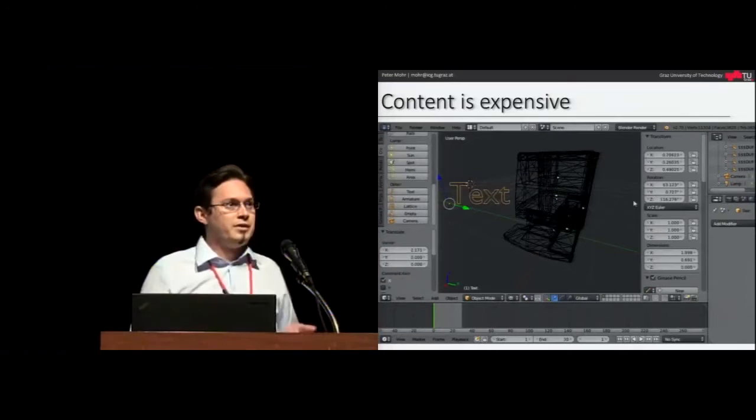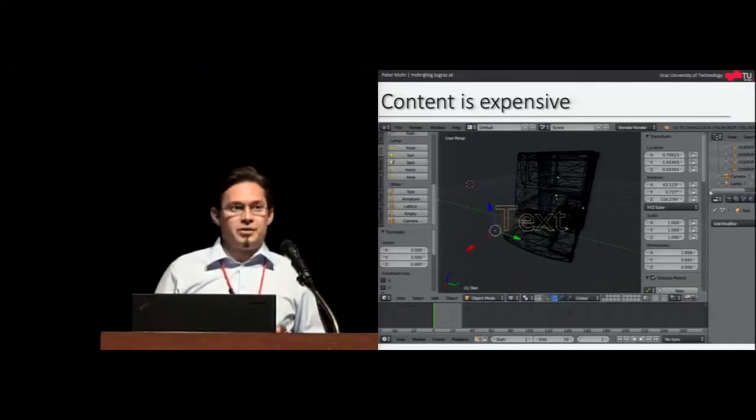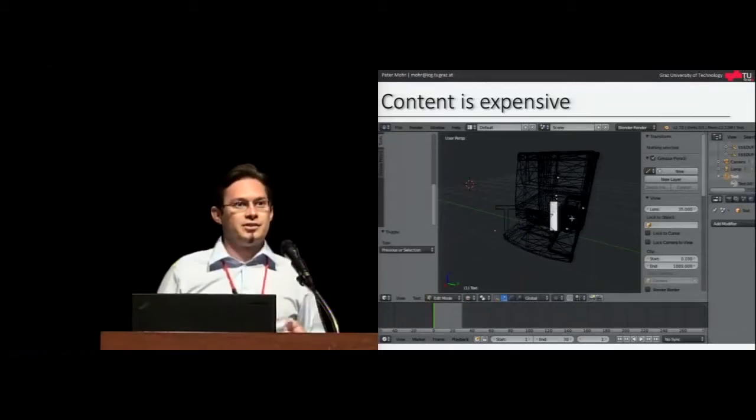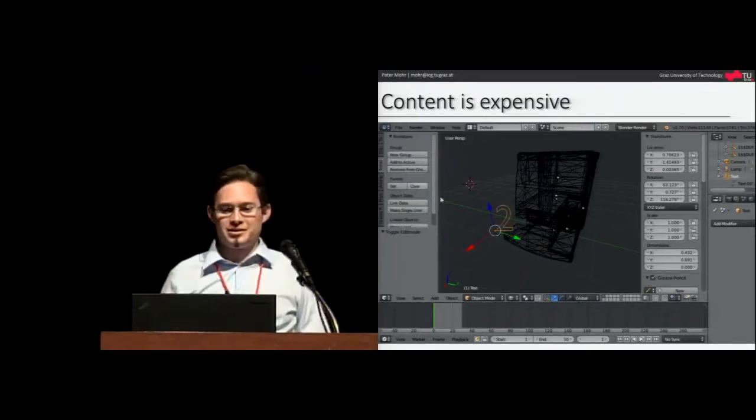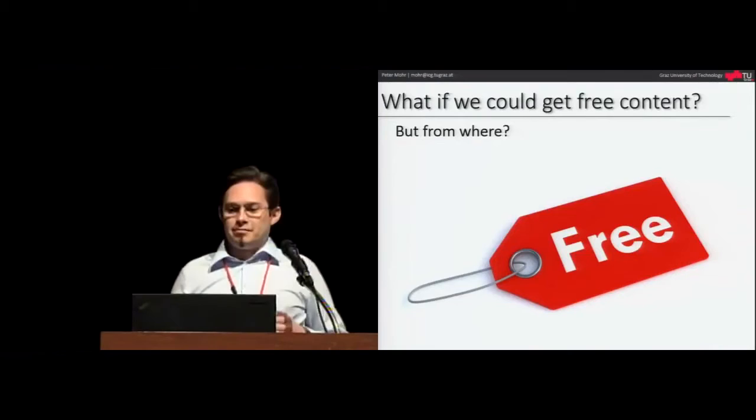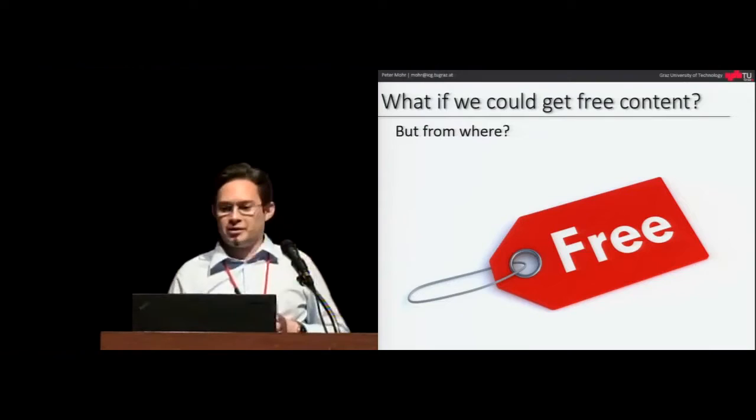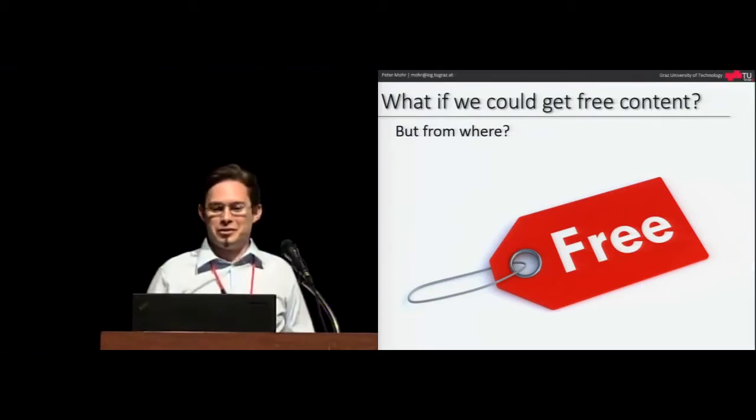You need the 3D geometry in any case for the rendering process, but you also need an author to generate the instructions and to create animations and place labels. This usually requires a graphics professional, which I show here in an exaggerated way in Blender, how slow it is to create a simple animation. But what if we could get free content somewhere, so that would be really nice. Free content is always nice, especially for researchers. Where can we find that?